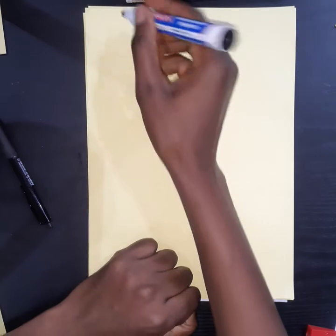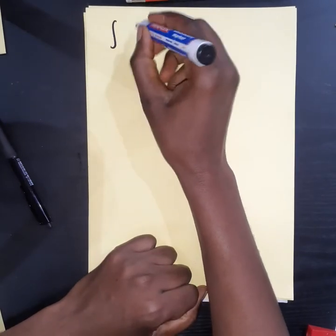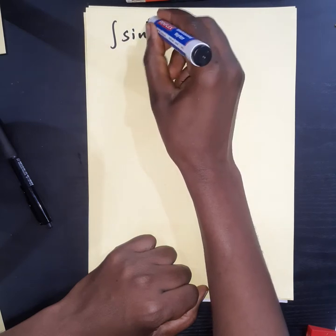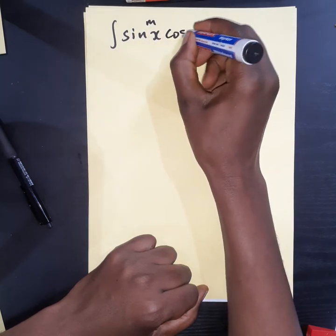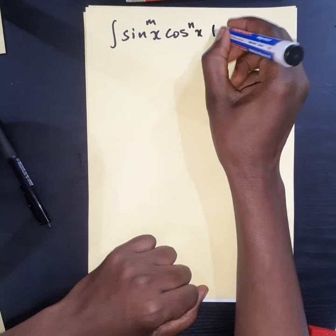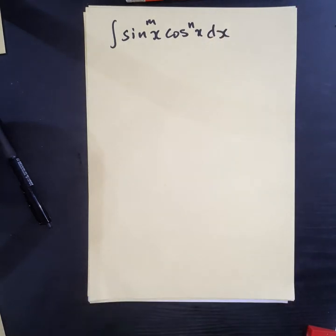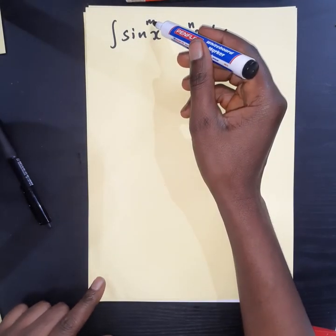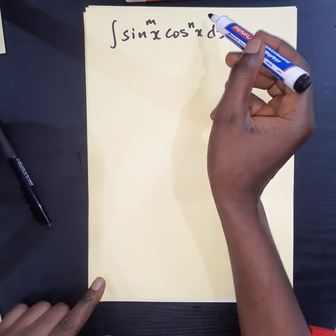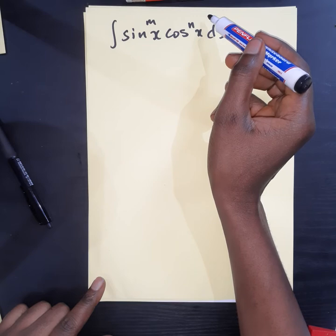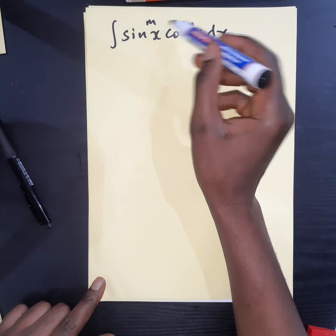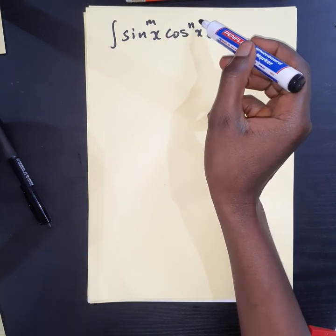We have just discussed the integrals of the form integral of sine of x to the power of m, cosine to the power of n of x dx. And we concentrated on the cases where m and n are both odd, but we didn't discuss a situation where both m and n are even.